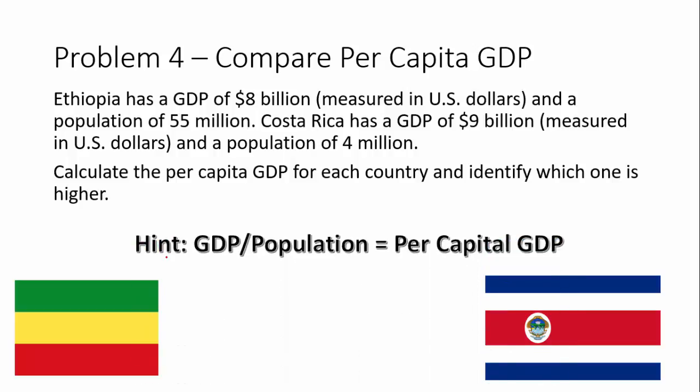The hint here is: GDP divided by population equals per capita GDP. Since they're all converted into U.S. dollars, we use $8 billion for Ethiopia divided by 55 million for the population. For Costa Rica, same thing — $9 billion divided by 4 million. We figure out which one is higher because that's converting like to like. The income distribution is not necessarily equal in these countries, but this tells us how much each country is producing per person. The higher the GDP per capita, the higher the standard of living in that country.